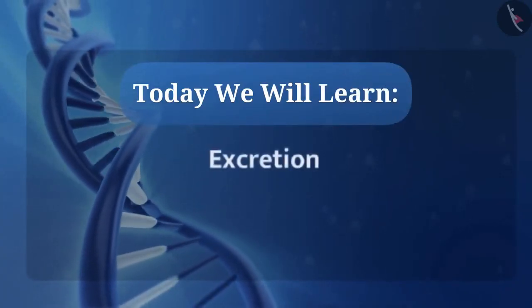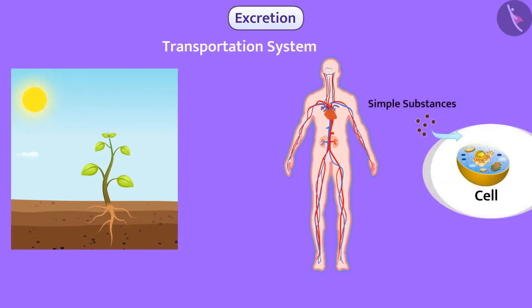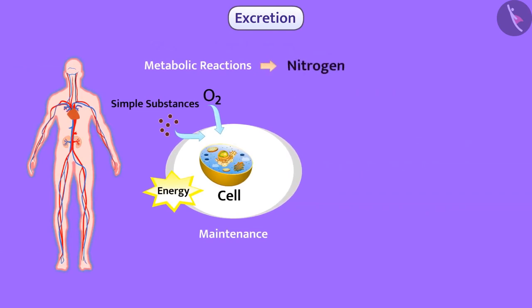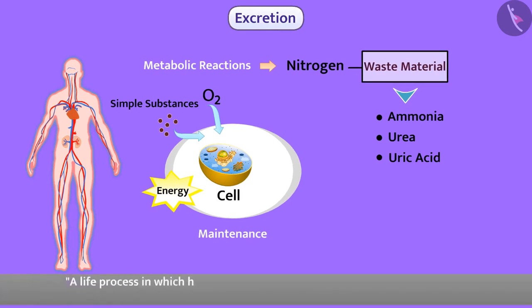Today we will learn about excretion. In the previous video, we learned that oxygen and nutrients are transported to every cell of the body with the help of the transportation system. With the help of these simple substances and oxygen, metabolic reactions take place in the cell, which help in energy generation and maintenance activities. During these metabolic activities, nitrogen-containing waste material gets generated. Such substances are harmful to the body. Therefore, it is necessary to remove them. The process of excretion helps for this purpose.